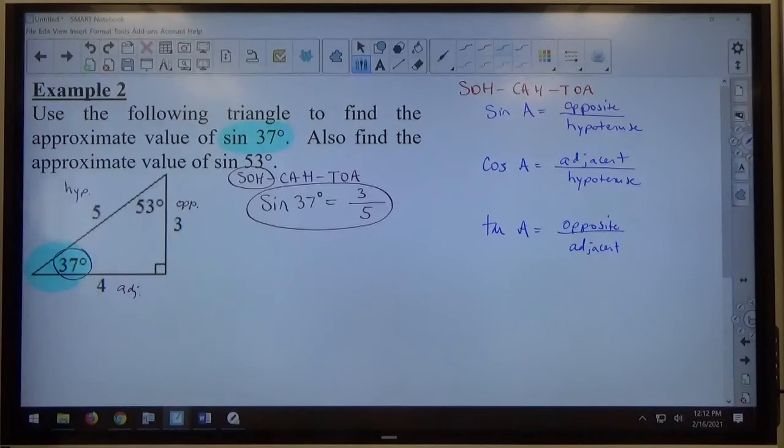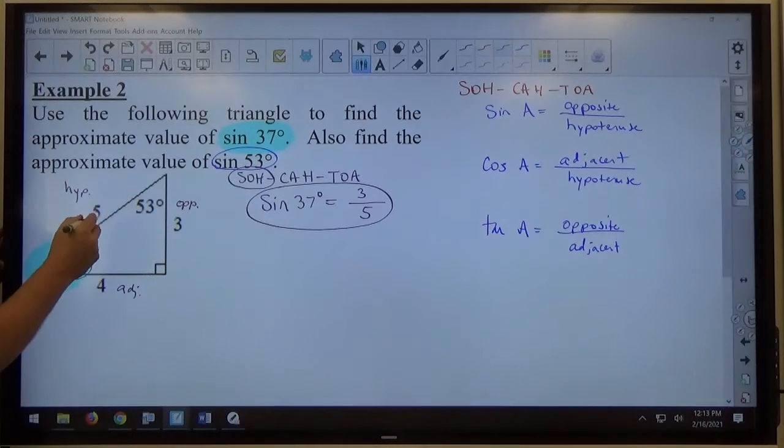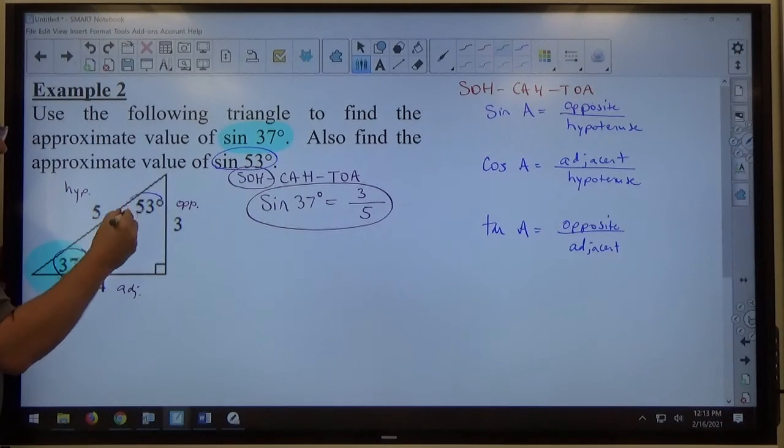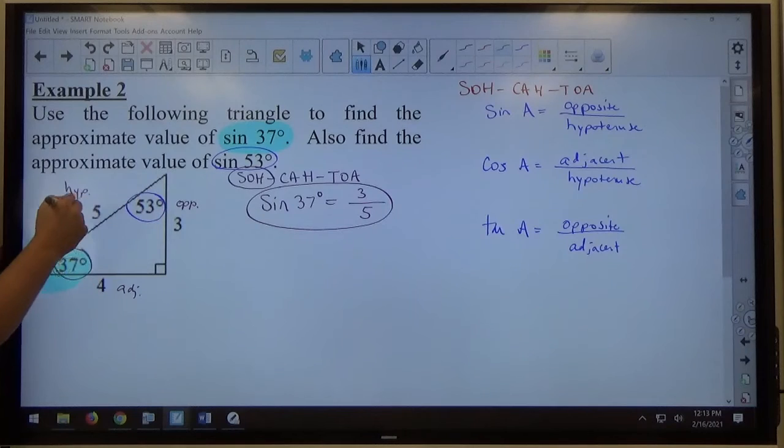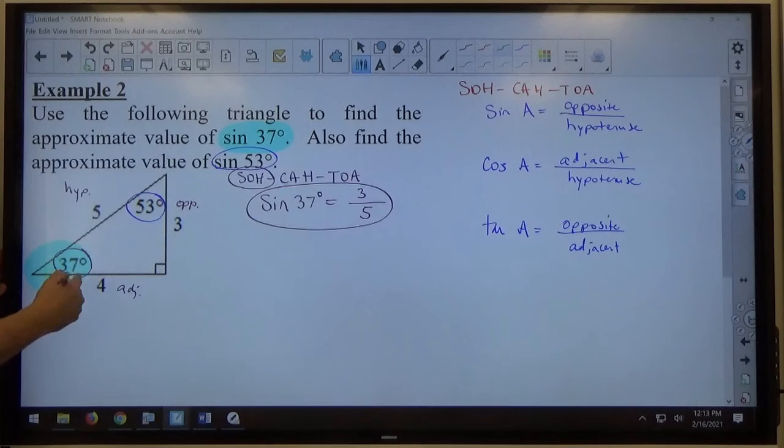The problem says also find the approximate value of sine of 53. So if I'm doing sine of 53 degrees, now I've got a 53 degree angle I'm working with.